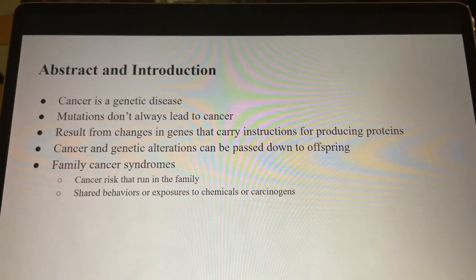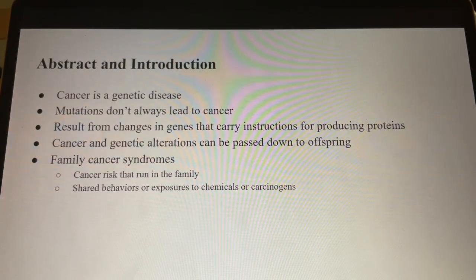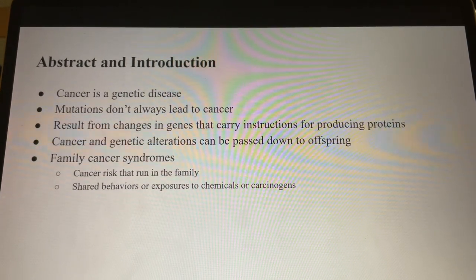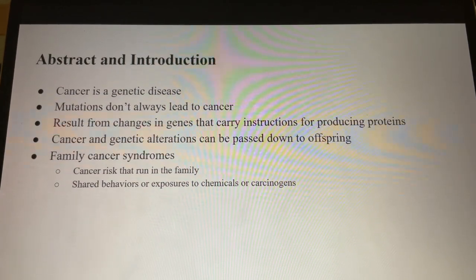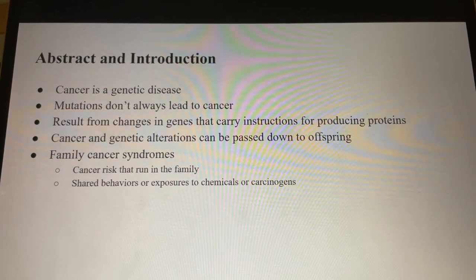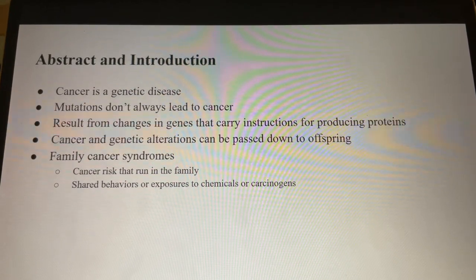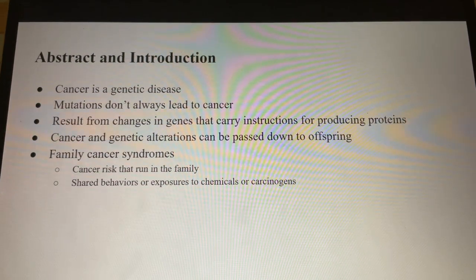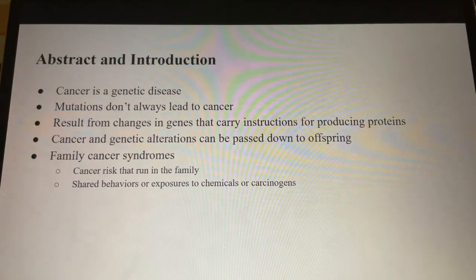There is a rare condition referred to as family cancer syndromes, in which the gene change increases the cancer risk that runs in the family. It is crucial to understand that not all cases of cancer clustering within a family can be attributed to family cancer syndrome. For example, sometimes the prevalence of cancer might be higher in specific families due to shared behaviors or exposures to chemical carcinogens, such as smoking or other factors like obesity. Cancer can also exhibit a familial pattern if family members have a combination of numerous genetic variations, each carrying a risk for cancer.